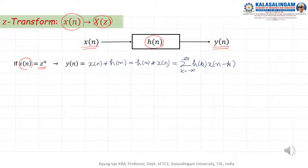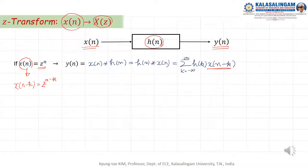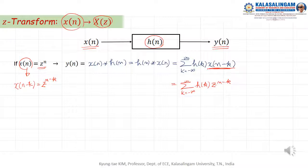Now X of N minus K, where X of N equals Z to the power of N, gives X of N minus K equals Z to the power of N minus K. Therefore we can rewrite Y of N as the summation of H of K times Z to the power of N minus K.